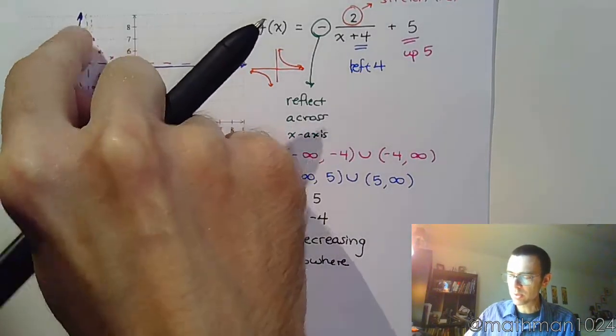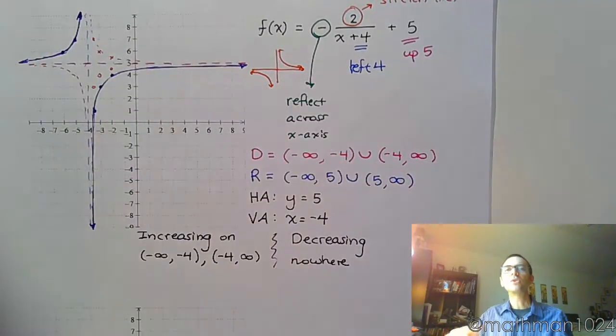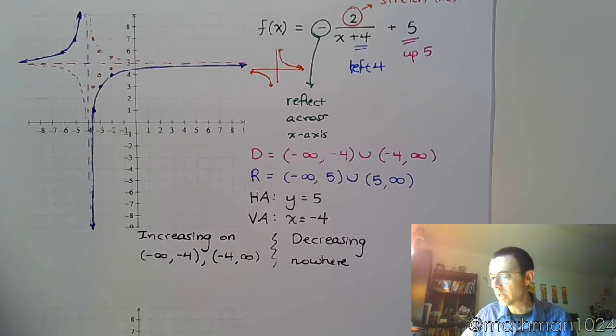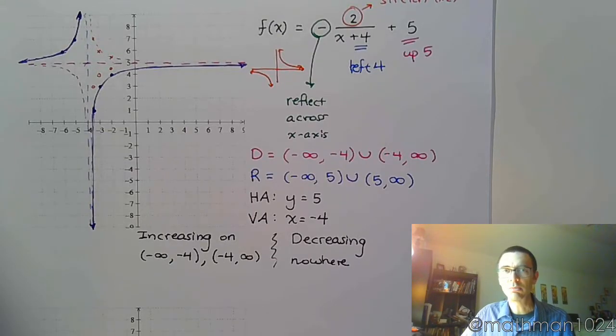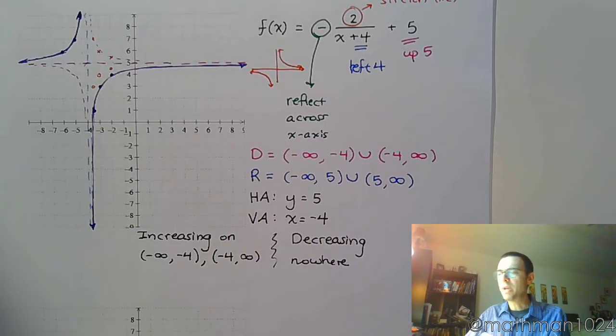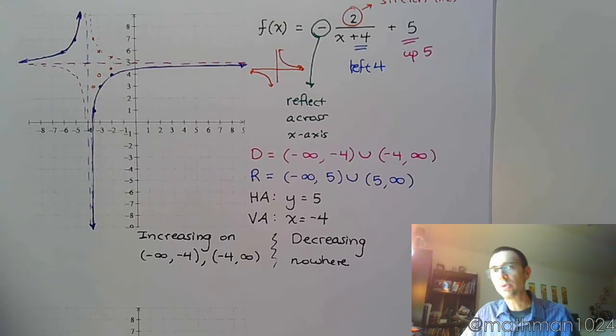And then where are we decreasing? Well, you see that all parts of our domain are already spoken for in terms of where we're increasing, so that means that we are decreasing nowhere. Look, you're going up, you're going up. There is never a place where we are decreasing. So there you have it. You've got your graph, domain, range, asymptotes, and intervals over which you're increasing or decreasing. You can get all of this information even without going to the graph, just with basic shifting techniques and knowing what your shapes are. And I expect you to be able to do that, so practice these guys. Get into the homework now, and let me know if you have any questions.